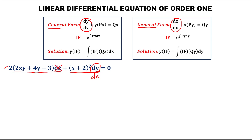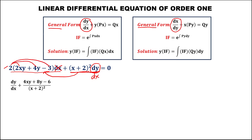This dx becomes the denominator of dy, and this (x plus 2) quantity to the power 2 becomes the denominator of 4xy plus 8y minus 6. Distribute this 2: this one is 4, 8, and negative 6, then equals 0.